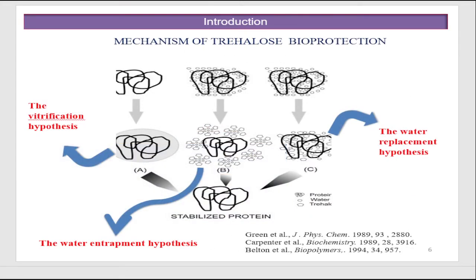Three mechanisms are proposed for trehalose's protective properties. The first is the vitrification hypothesis, according to which trehalose forms a viscous matrix and helps proteins protect their three-dimensional structures.